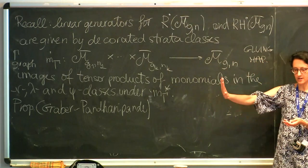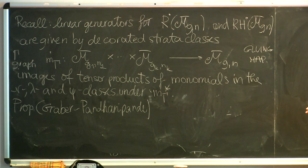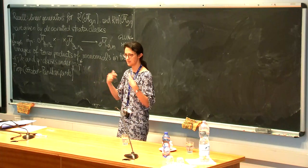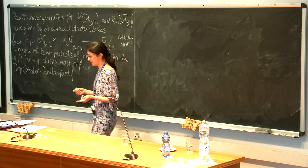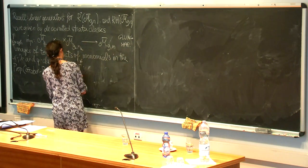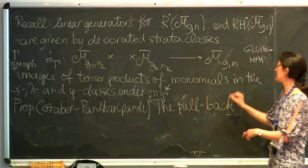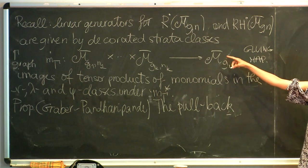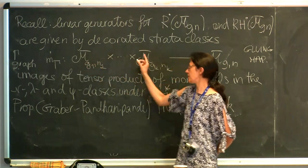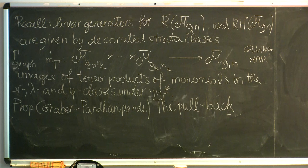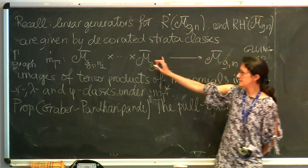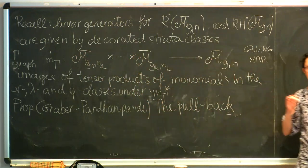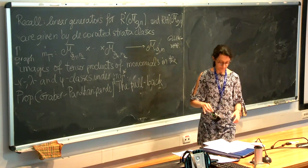If you remember, we defined the tautological rings by saying they have to form a system of rings for all g,n that is closed under pushforward by the standard forgetful and gluing maps — the ones associated to graphs. You may worry about what happens if you take the pullback instead. We will get something that starts in the cohomology of M-bar_{g,n} and takes an image which is a tensor product of cohomology classes on each one of the factors. If we take the pullback under the gluing map and we start with a tautological class, then we get an image which is a tensor product of tautological classes. So the system is automatically also closed under pullback.